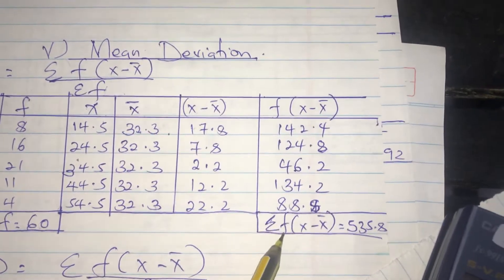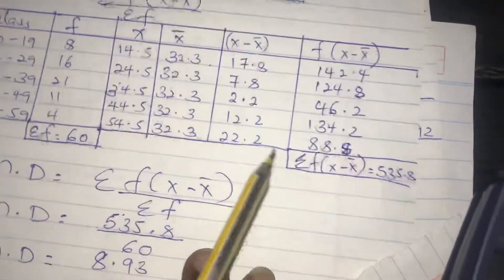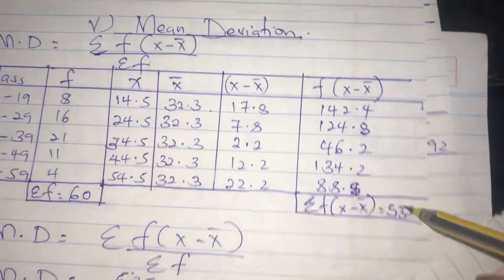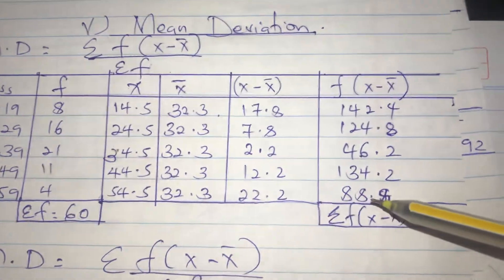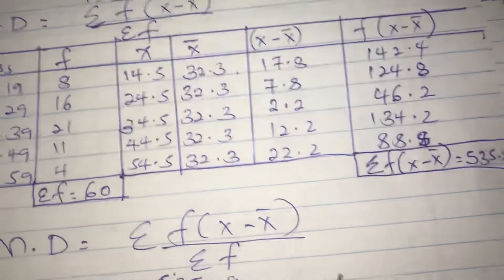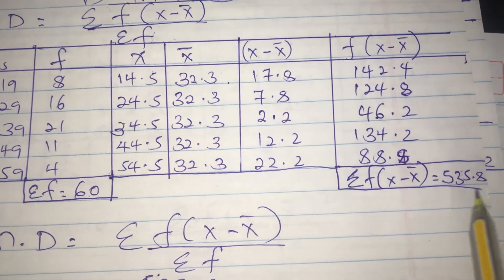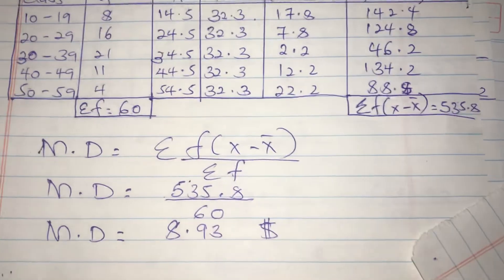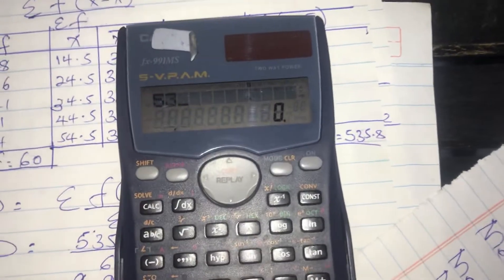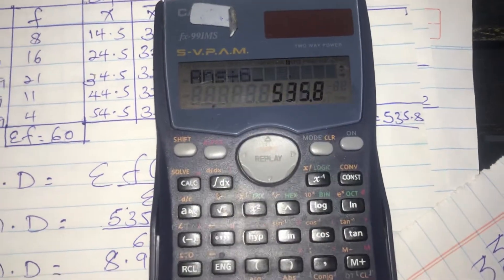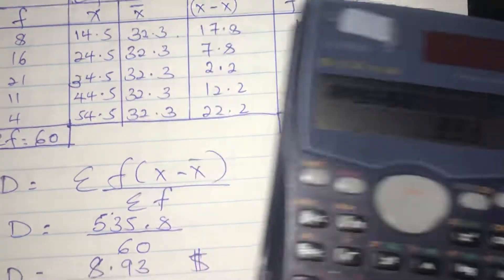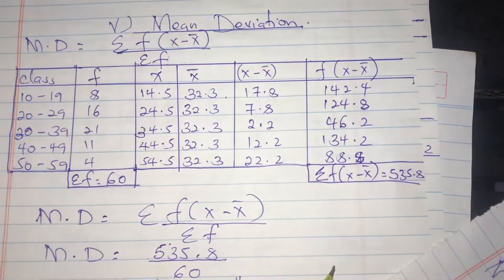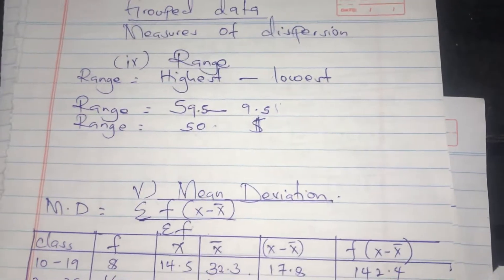After that, we get the summation of f times |x minus x̄|. Then we substitute into the formula: summation f|x minus x̄| divided by summation f, which is 535.8 divided by 60, giving 8.93. That is our mean deviation. That is how to calculate mean deviation for grouped data, along with the range. Thanks for watching.